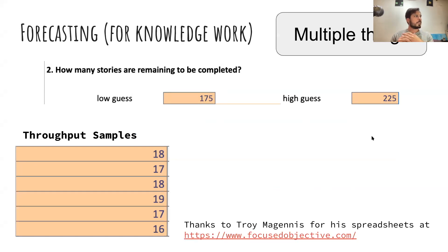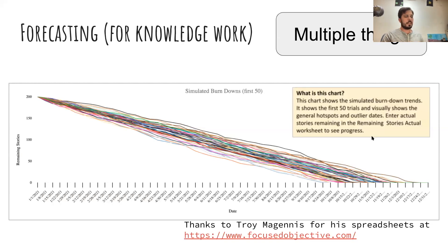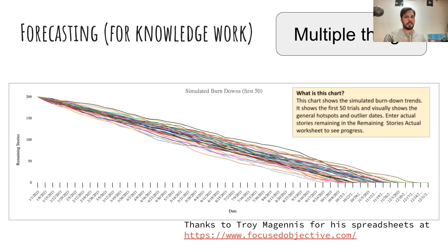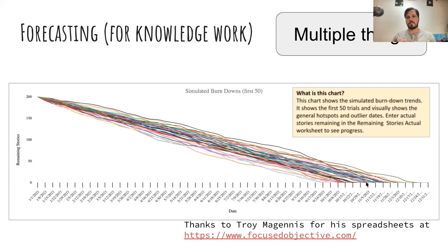For multiple things, we can create a forecast as well — it's a bit more complicated. We need a guess of how many things there are, and a set of historical throughput samples — throughput being the number of things we get done in some time period. Once we have those samples, we can create a simulated burndown, very similar to the simulated hurricane paths. We can draw a line where 85% of these burndowns finish before that line and say we'll be done with this bucket of work by this date with 85% confidence. This is called a Monte Carlo simulation. Troy McGinnis has free spreadsheets available at focusedobjective.com to help run these forecasts.